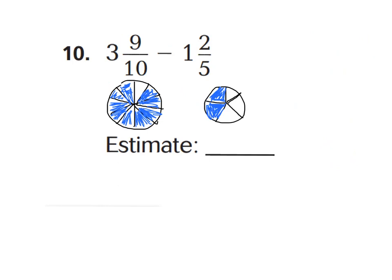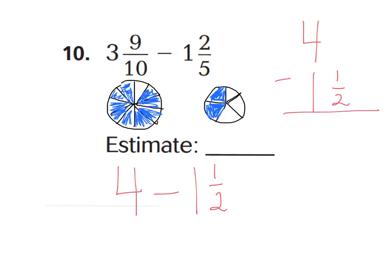Number ten says three and nine-tenths minus one and two-fifths. Nine-tenths is almost one whole because there's only one-tenth left to shade in, so I'm going to estimate three and nine-tenths to be about four wholes. Now for one-and-two-fifths: you can make an imaginary line down the middle to show one-half, and two-fifths is really close to that, so I'll call this one-and-one-half. Now I can subtract four wholes minus one-and-a-half. Don't drop down your one-half — regroup from your wholes. Borrow from four wholes to make three wholes and two-halves. Two-halves minus one-half equals one-half, and three wholes minus one whole is two wholes. So our estimated answer is about two-and-a-half.